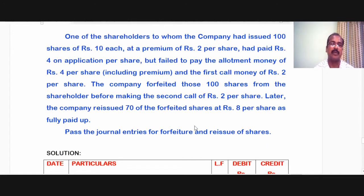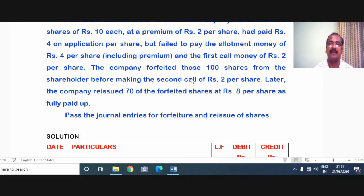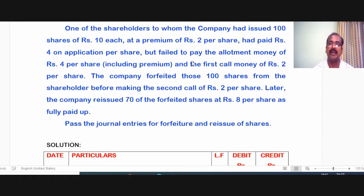Let us get into the problem. One of the shareholders to whom the company had issued 100 shares of 10 rupees each at a premium of 2 rupees per share had paid 4 rupees on application per share, but failed to pay the allotment money of 4 rupees per share including premium, and the first call money of 2 rupees per share.